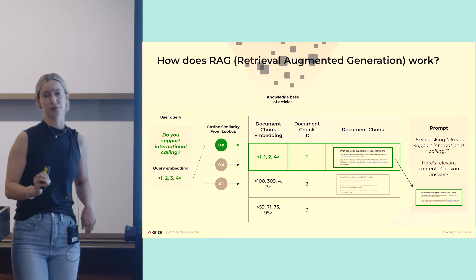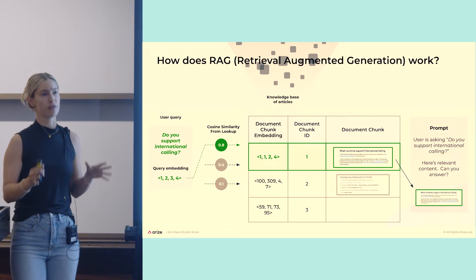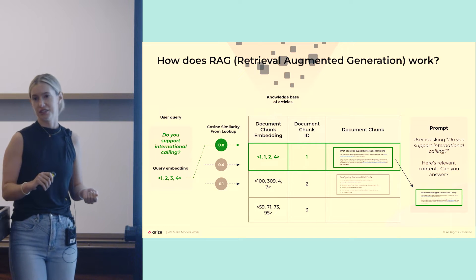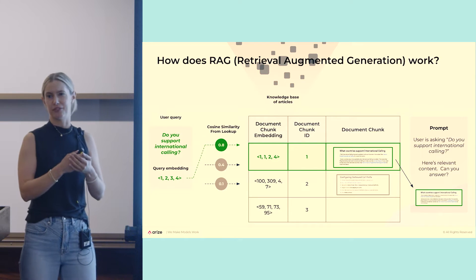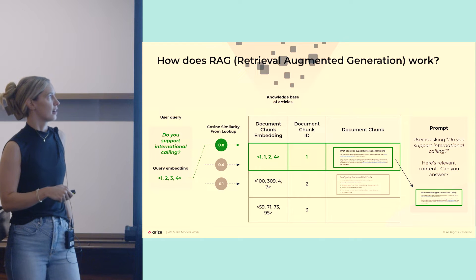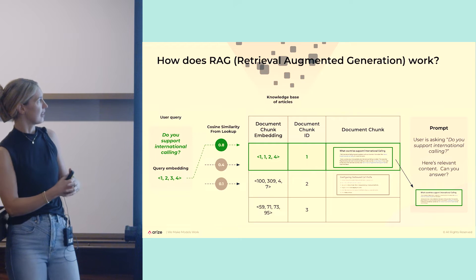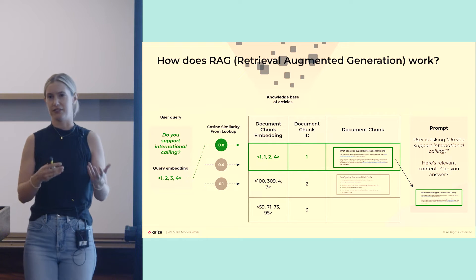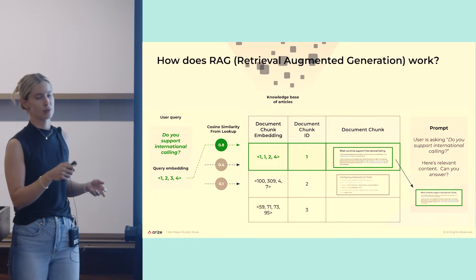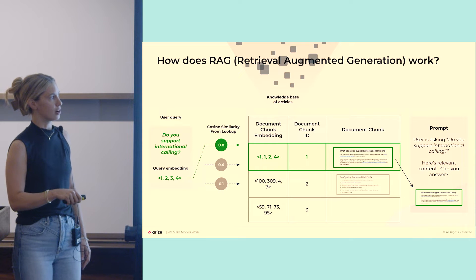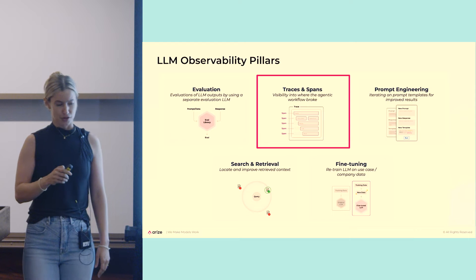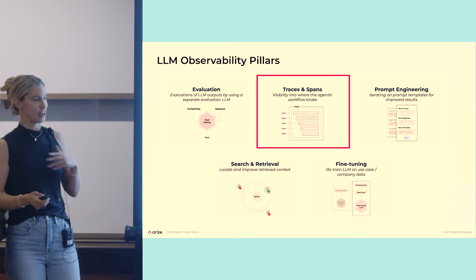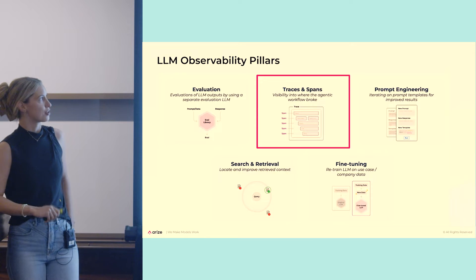Ofer went into a lot of detail with RAG — retrieval augmented generation. I'm just giving you the overview to see how it works in a larger LLM application. You essentially first have your articles of knowledge — that's your context you're giving to the LLM. You take all those articles, chunk them in different ways, put them through an embedding model, and then you can use it to look up queries. A user might ask a chatbot 'do you support international calling?' — you run it through the same embedding model and use cosine similarity or a different distance metric to look up the most similar articles that would answer the question. You feed all that to the LLM along with a prompt, and then you get a response. RAG and advanced RAG methods are increasing in popularity — you can talk to me or Ofer about that.